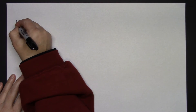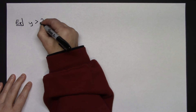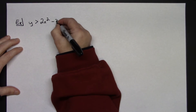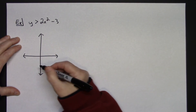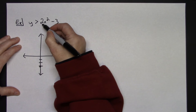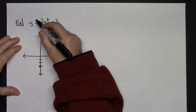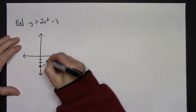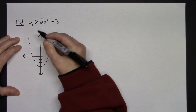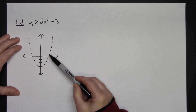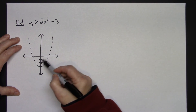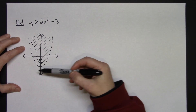Let's briefly cover a couple more cases without precise graphing. For y is greater than 2x squared minus 3: it's an upright parabola shifted down 3, and since it's a strict greater than, it gets a dotted line. With greater than and an upright parabola, you shade above — on the inside above the curve.